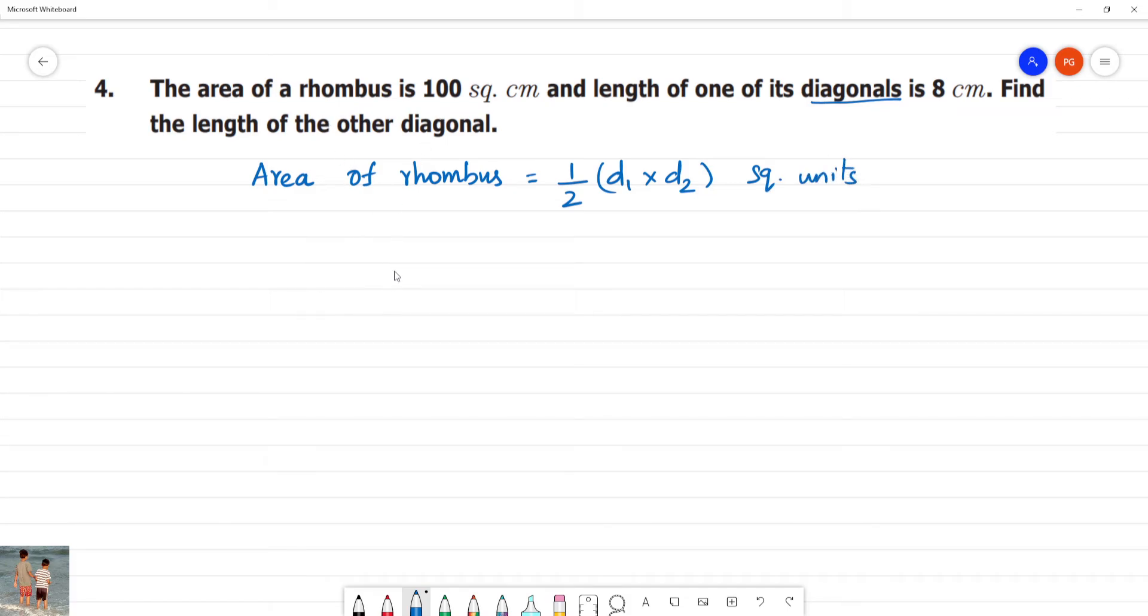So we will put area of rhombus. Half into diagonal 1 value, diagonal 1 is 8 centimetre.